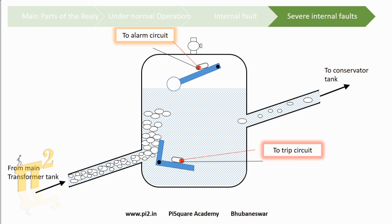The Buchholz relay protects the transformer from internal faults. As we see here, it can only work with oil-filled transformers, because only in oil-filled transformers can gases be generated.